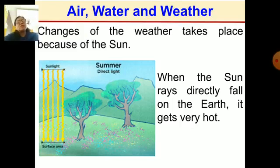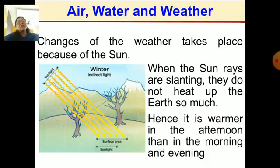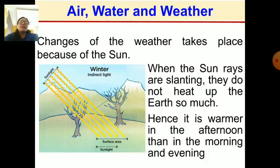In the afternoon the sun is overhead so we get direct heat and it gets very hot. In winter the rays are slanting and it is less hot. When sun rays are slanting they do not heat up the earth so much. As the sun sets the rays become slanting again and it becomes less warm.